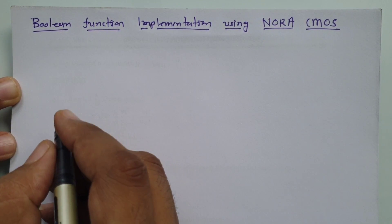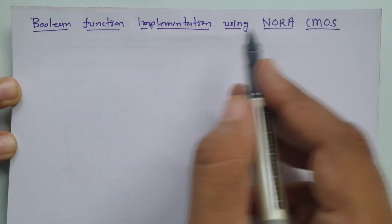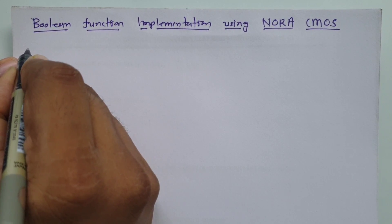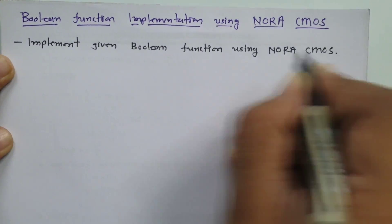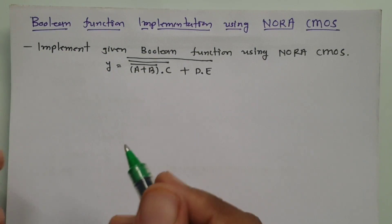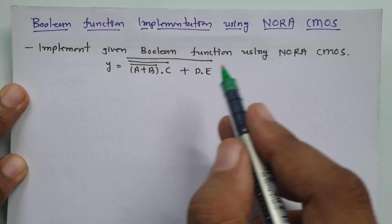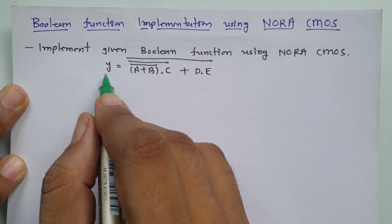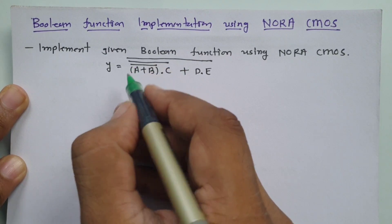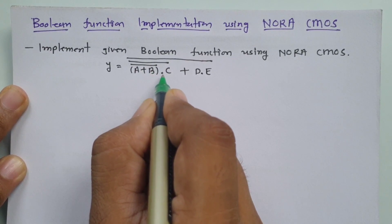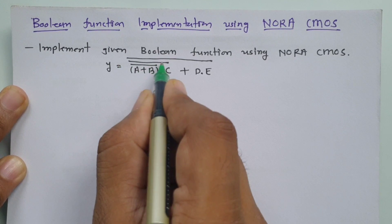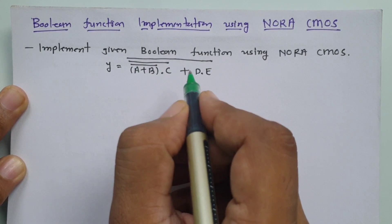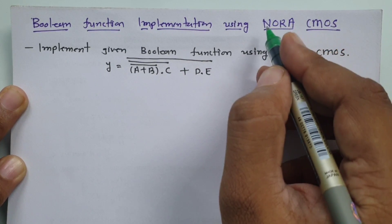First I'll give you a question and after that we will implement that function using Nora CMOS step by step. The question requires us to implement a Boolean function using Nora CMOS. The given function is: (a + b) whole bar dot c, again whole bar, plus d dot e whole bar. This is how the function will be given and we can implement it using Nora CMOS.